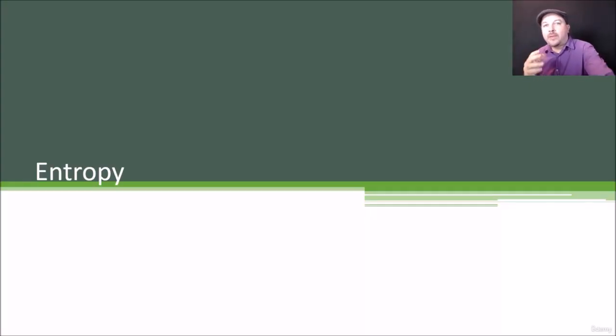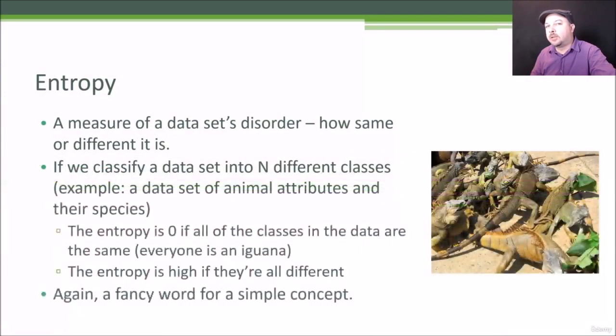Let's talk about entropy, another example of a fancy word for a simple concept, but we need to understand this before we talk about decision trees. Entropy, just like it is in physics and thermodynamics, is a measure of a data set's disorder - how same or different is a data set.